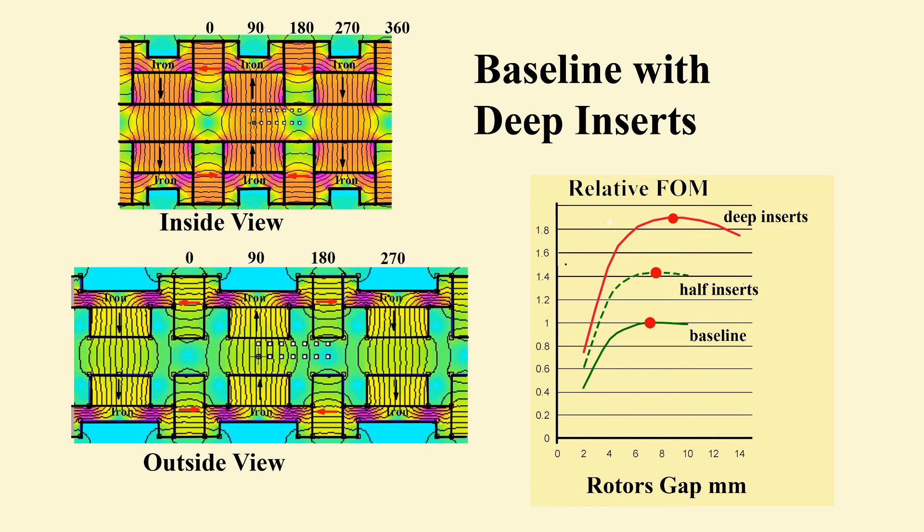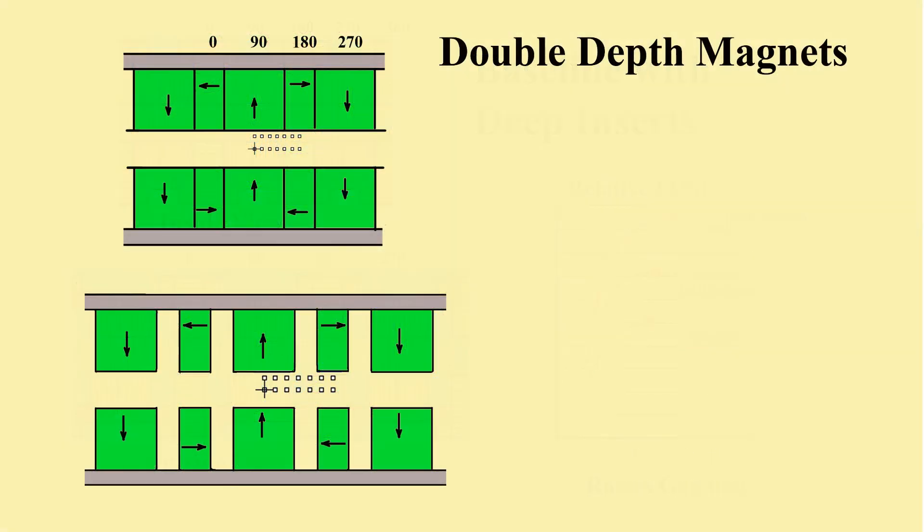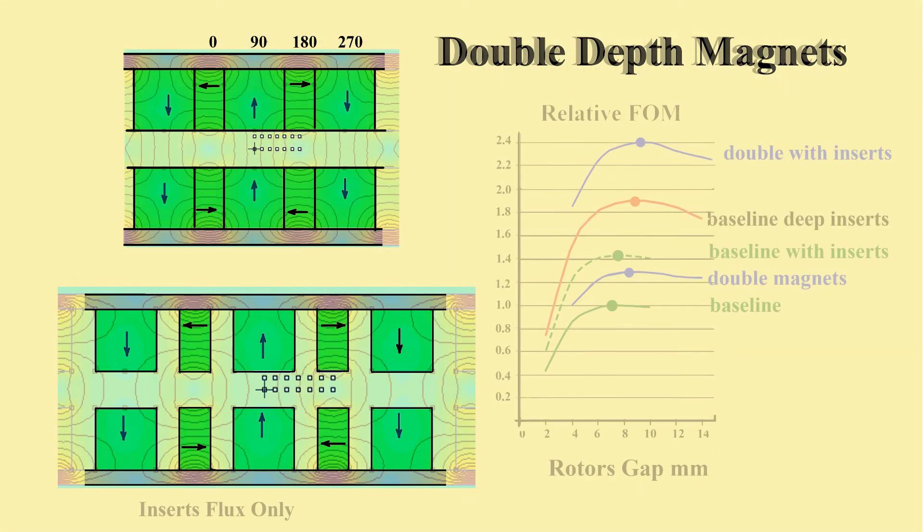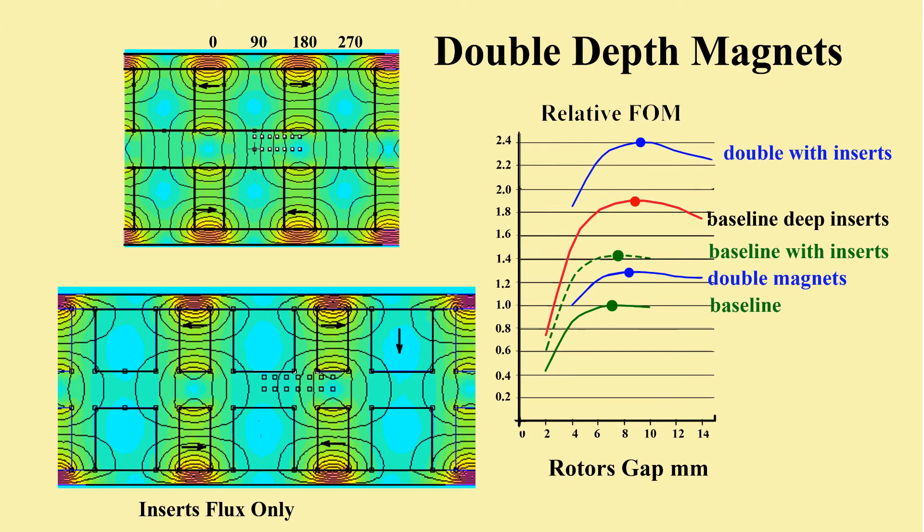The last option doubles the main magnet depth and has deep inserts. Wastage is present, but useful flux is enhanced due to the insert's greater depth. Dissipation should be some 60% lower than the baseline. It costs double the magnet mass compared with the baseline with inserts. It is notable that double depth without inserts appears inferior to the baseline with inserts.